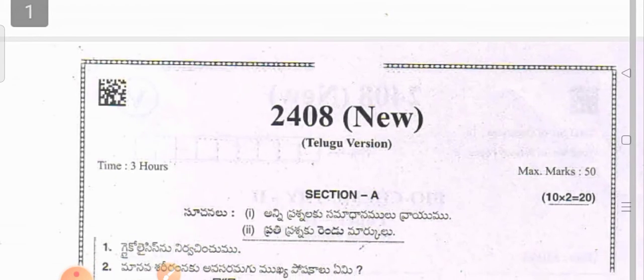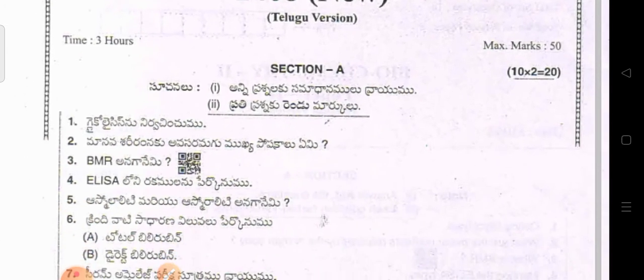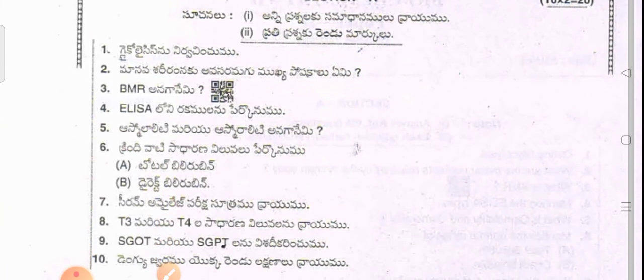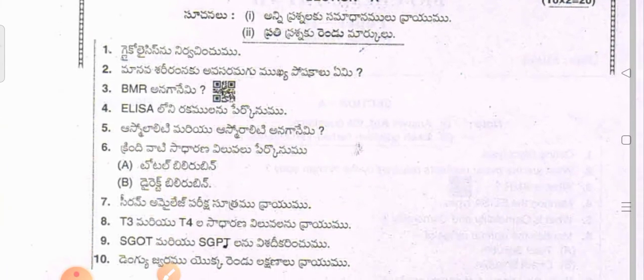Next, moving on to the Telugu medium section. For Telugu medium MLT second year biochemistry students: Section A — answer each question for one mark. Define glycolysis. What are the major nutrients required by the human body? What is BMR? Mention the ELISA types. What is osmolality and osmolarity?